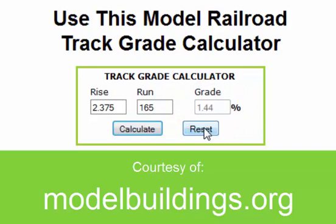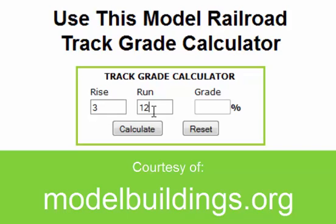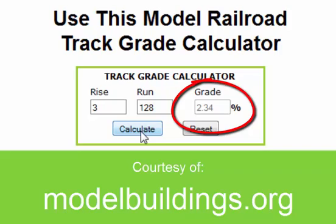Now we'll try another figure. This time the rise will be 3 inches and the run will be 1.28 inches. Calculate it and it's a 2.34% grade.